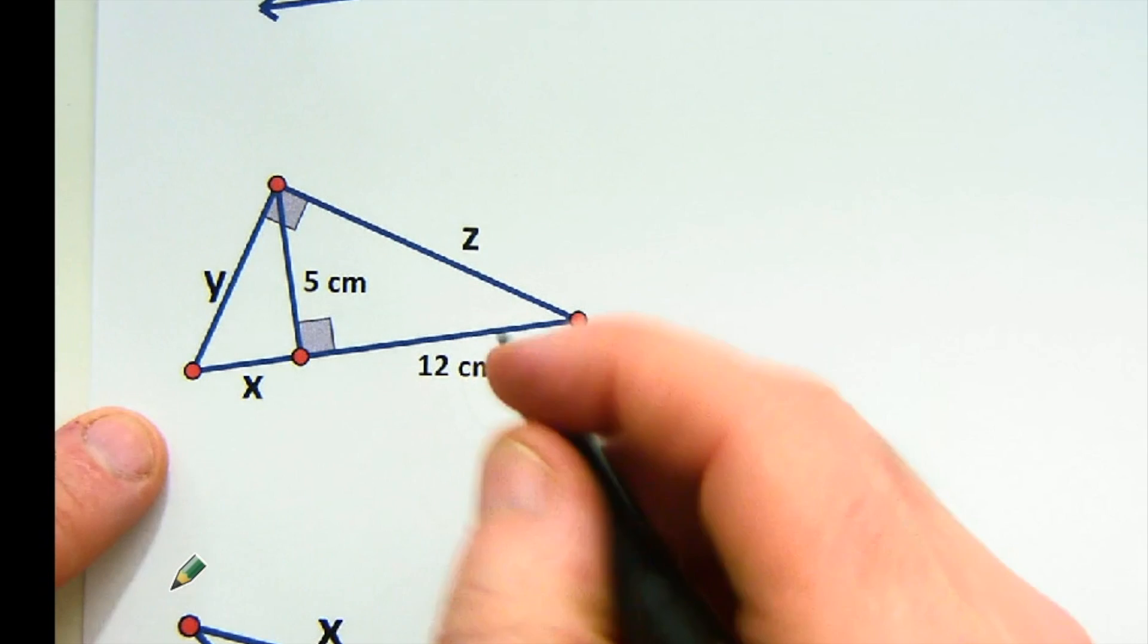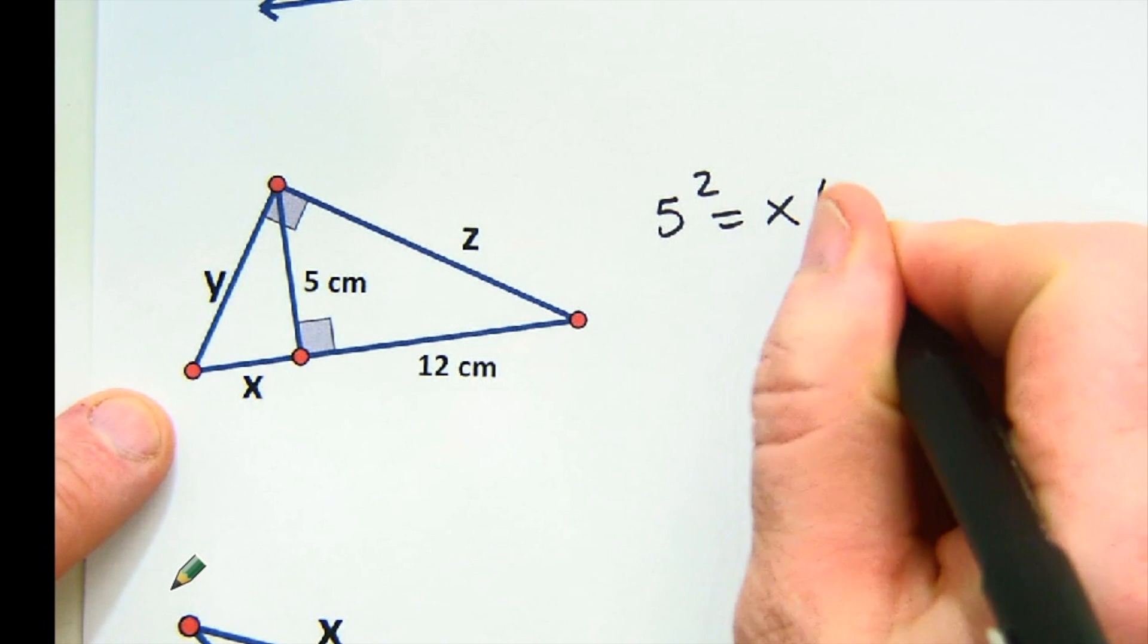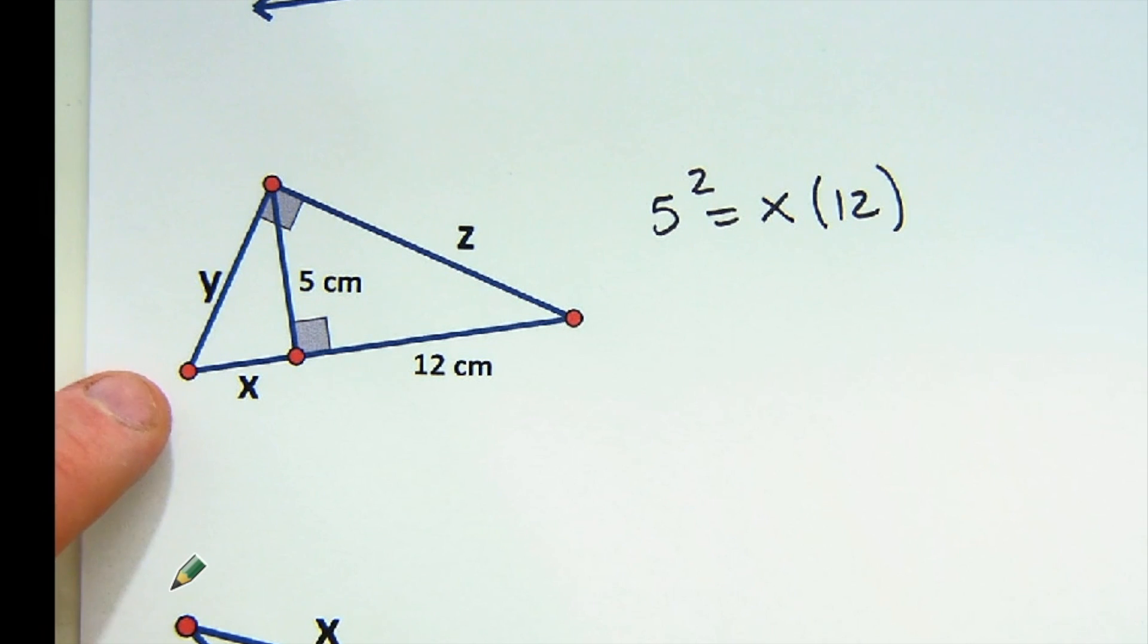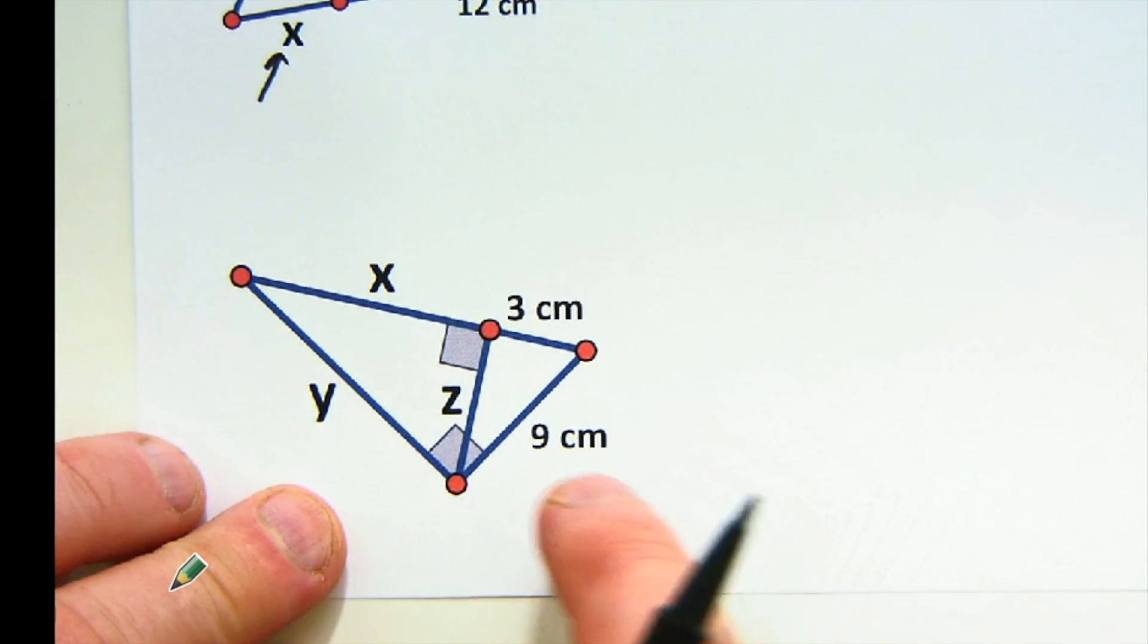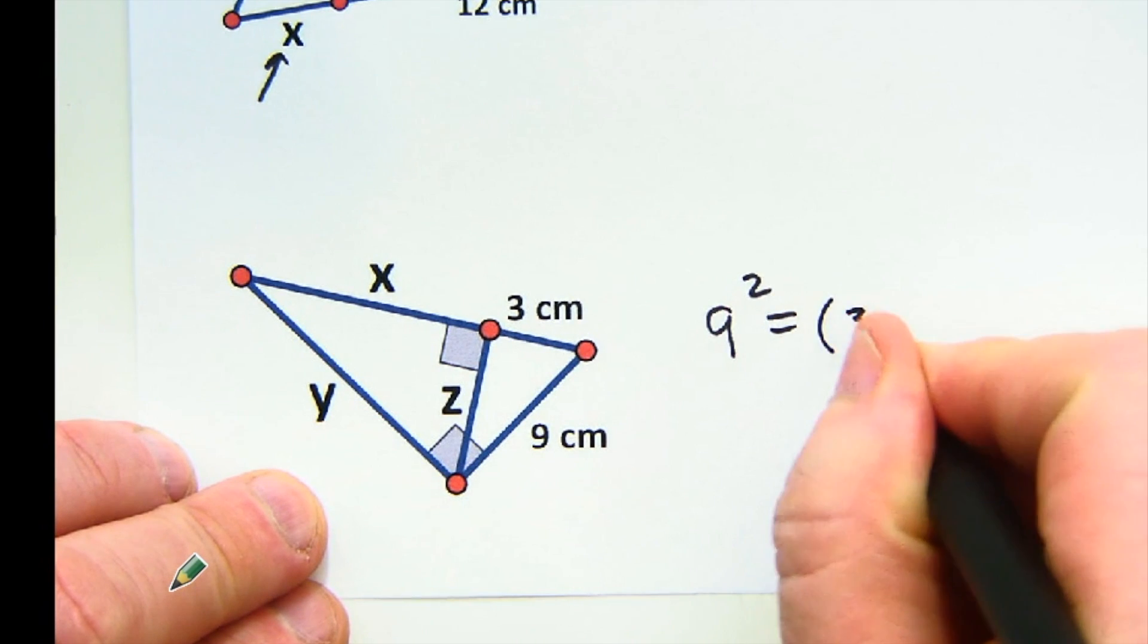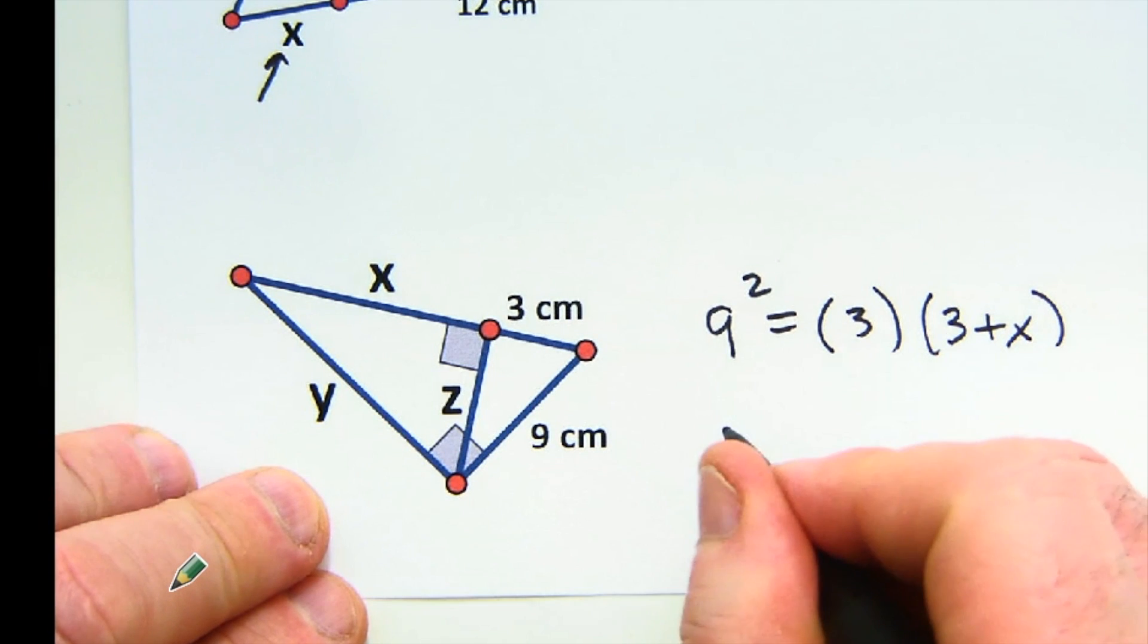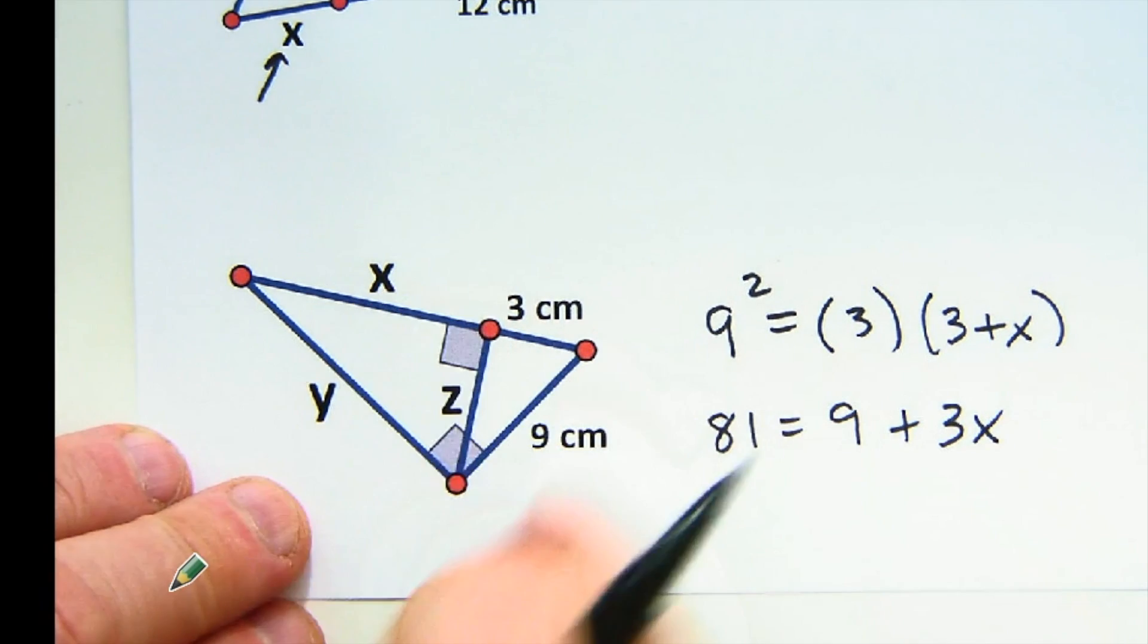Moving quickly, just to give you examples. Here again, this is the geometric mean provided. Always start there. 5 squared equals x times 12. I divide 12 into 25 and get my value there. And then I'm going to use that number to be able to solve the others. So I'd find that, and then I'd be able to find the others. Here, again, it's upside down. But this is a geometric mean. Z is a geometric mean. Y is a geometric mean. I would start with y squared equals 3 times the entire length. Ah, 3 plus x. And so I get 81 equals 9 plus 3x. Move it over, solve, plug it in, and work out the others.